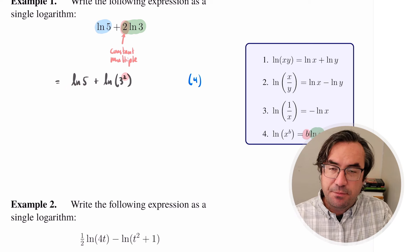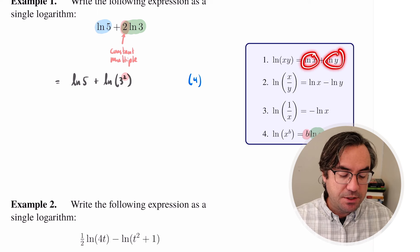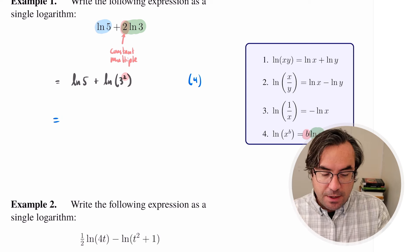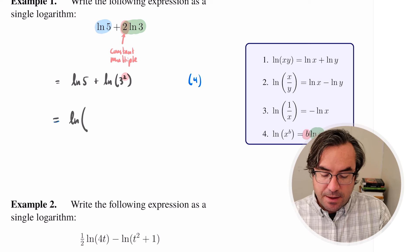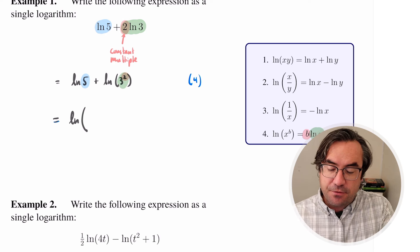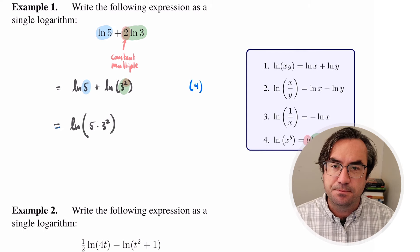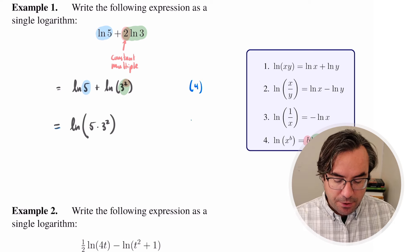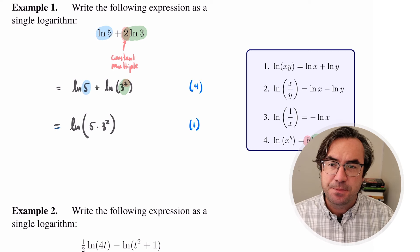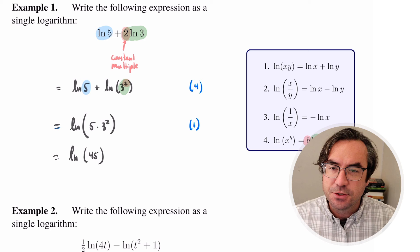Now we have natural log of something plus natural log of something else — it's in the form for property 1. So we can use property 1 and consolidate these into a single log. We take the 5 from the first log term and the 3 squared from the second, multiply them together inside one log function. We went from addition outside the log to multiplication inside. Doing the arithmetic: 5 times 9 is 45, so we get natural log of 45.